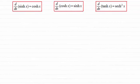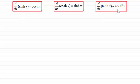Hi there. The purpose of this video is to introduce you to the three differentials of sinh(x), cosh(x), and tanh(x). The differential of sinh(x) is cosh(x), the differential of cosh(x) is sinh(x), and the differential of tanh(x) is sech squared x. I'd strongly encourage you to try and remember these results, but I also want to show you how we go about proving them, just in case you're asked to do that.